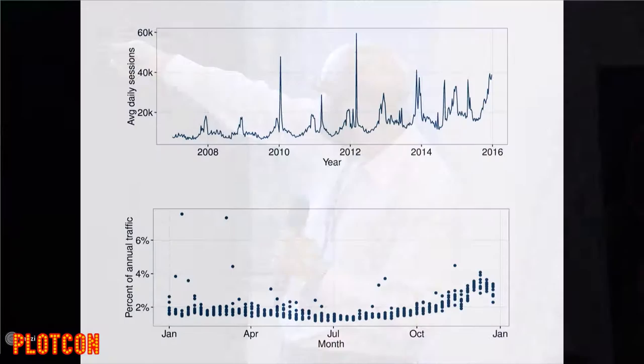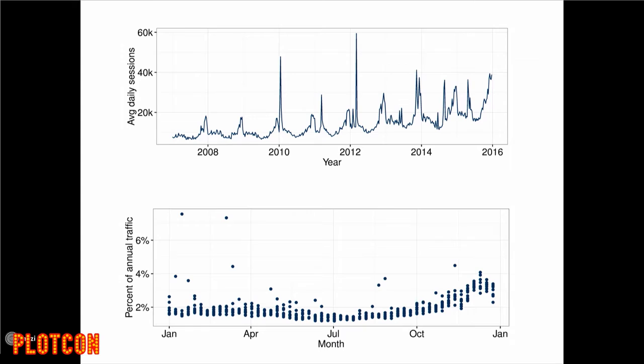You can see we have a few really big spikes. In addition to the seasonality, people come to Charity Navigator when there's been a natural disaster, when there's been a scandal. There's a whole lot of traffic around the election. We rate the Clinton Foundation; we have a donor advisory around the Trump Foundation.